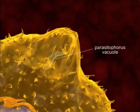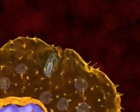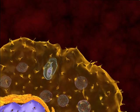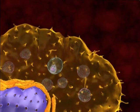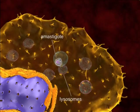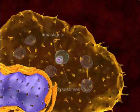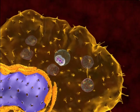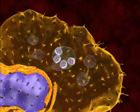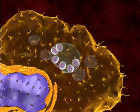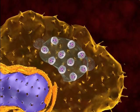During and after the internalization of the parasite, the parasitophorous vacuole assembles. In the vacuole, the promastigote transforms into an amastigote. Following the transformation, host cell lysosomes migrate and fuse with the parasitophorous vacuole. The lysosomal content is released into the vacuole; however, the parasite is not altered.